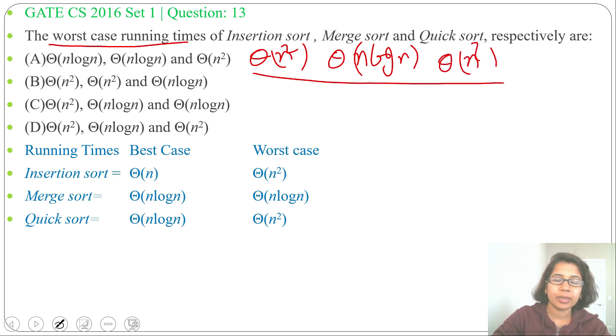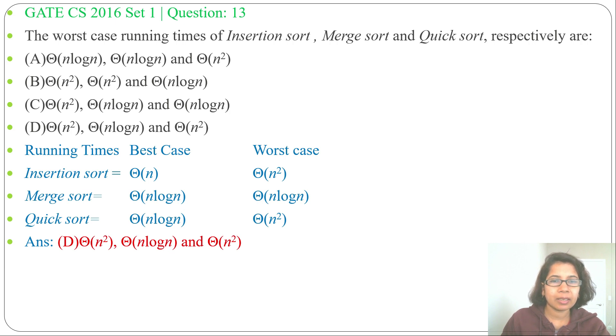Which option contains this combination? So option D: theta of n squared for insertion sort, theta of n log n for merge sort, and theta of n squared for quick sort. If this lecture is helpful for you, please like and subscribe. Thank you.